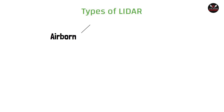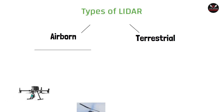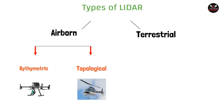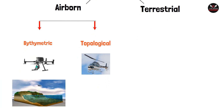Now let's look at the types of LiDAR. Generally, LiDAR can be divided into two types based on usability: Airborne LiDAR and Terrestrial LiDAR. Airborne LiDAR is used in aircraft or drones, while Terrestrial LiDAR is operated from the ground. Based on application, Airborne LiDAR is further divided into Bathymetric and Topographic. Bathymetric LiDAR is used for underwater surveys such as mapping the seafloor, while Topographic LiDAR is used to extract the topography of the Earth's surface.